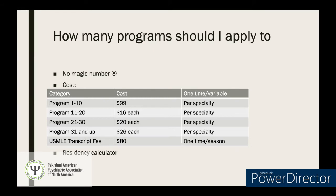It's also important to consider application costs. Applying to 1–10 programs costs a flat $99 per specialty. Programs 11–20 cost an additional $16 each; 21–30 cost $20 each; 31 and up cost $26 each. The USMLE transcript fee is $80 but charged only once per season regardless of how many programs you apply to. ERAS offers a residency cost calculator to help estimate costs based on your target number of programs.